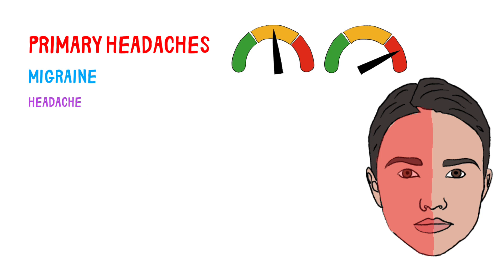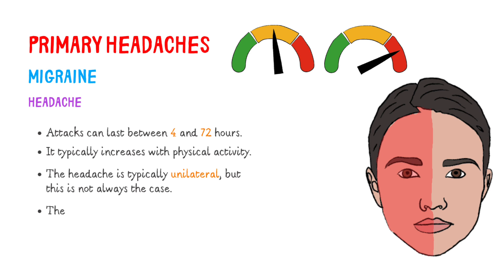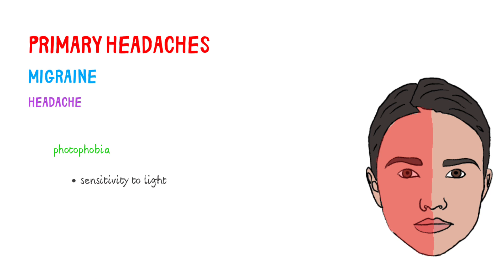Migraine pain can be described as moderate to severe, with attacks lasting between 4 and 72 hours. It typically increases with physical activity. The headache is typically unilateral, but this is not always the case, and the pain tends to become pulsatile or throbbing as it intensifies. During attacks, most patients experience nausea and may even vomit. Many people experience photophobia, which means sensitivity to light, and phonophobia, which means sensitivity to sound.